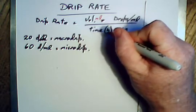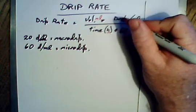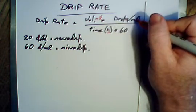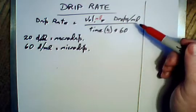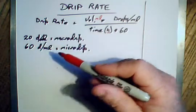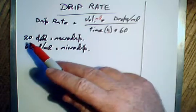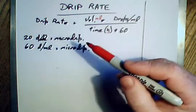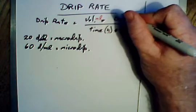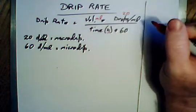That's going to vary. A macro drip, which is a normal one that you'll be using, will be 20 drops per milliliter. The common thing is to already know that that's 20.